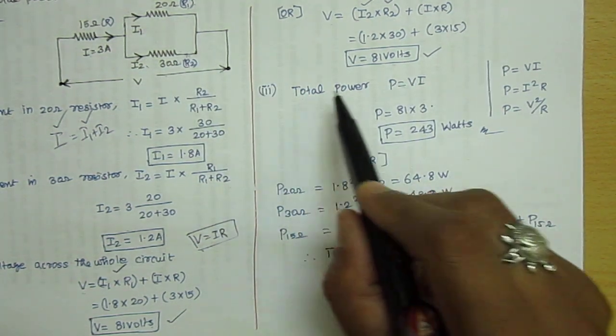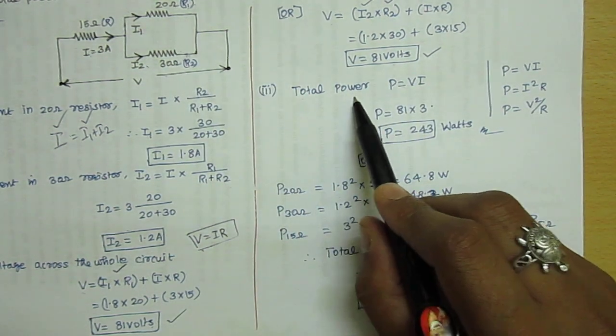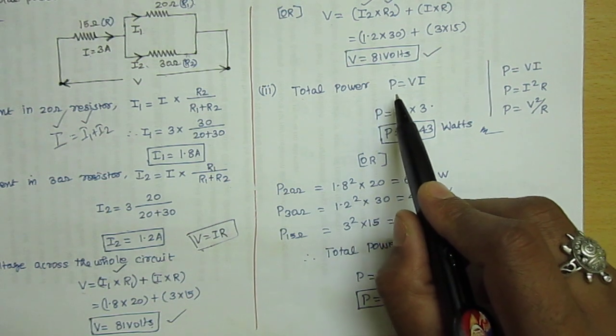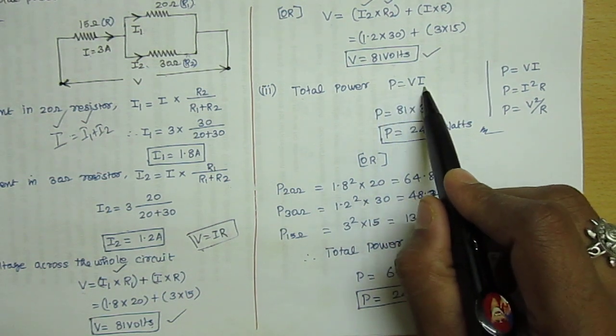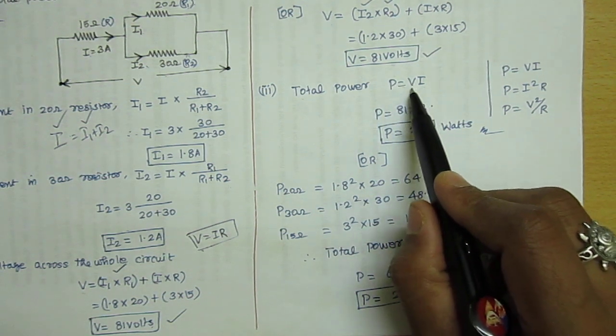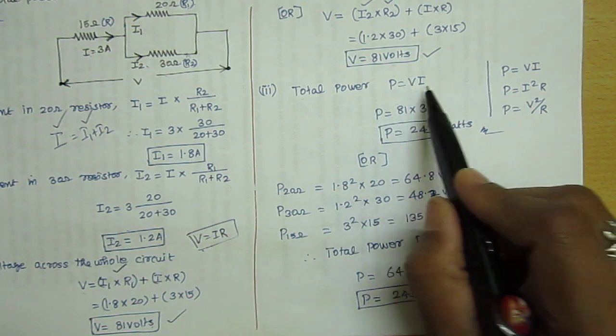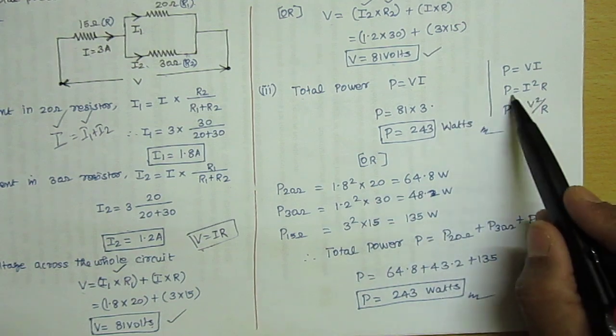For question 3, we need to find the total power consumed in all resistors. Power is equal to V × I, the product of voltage and current.